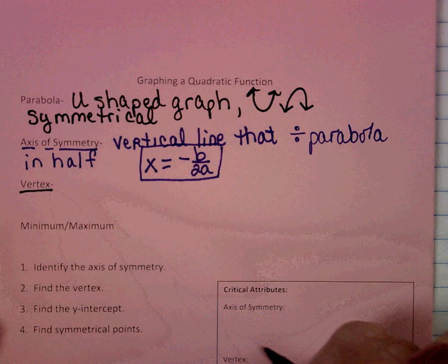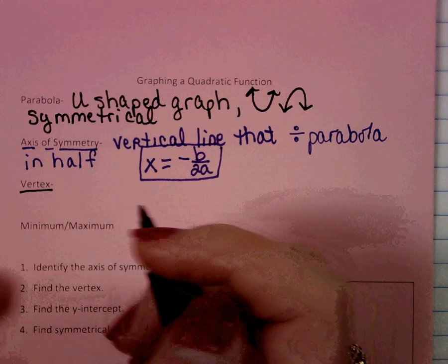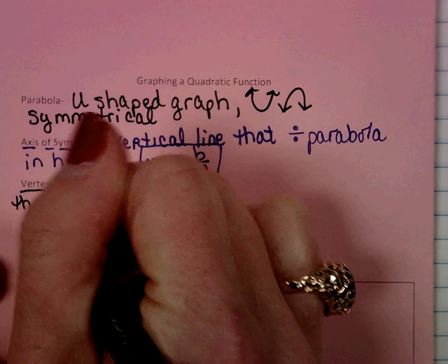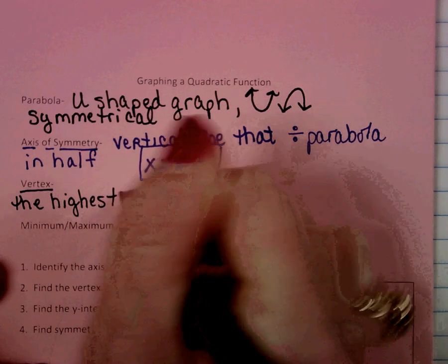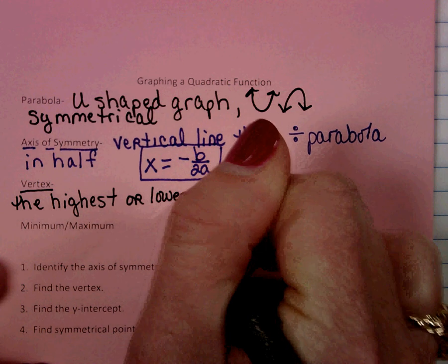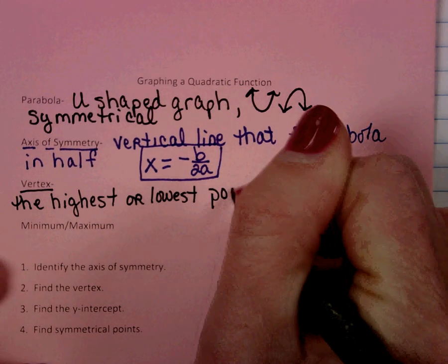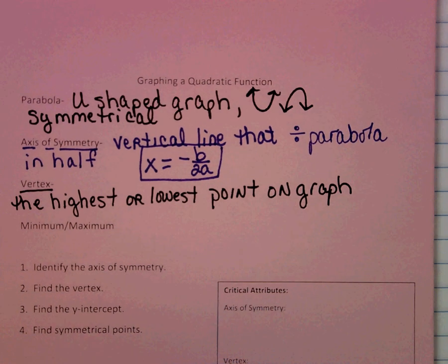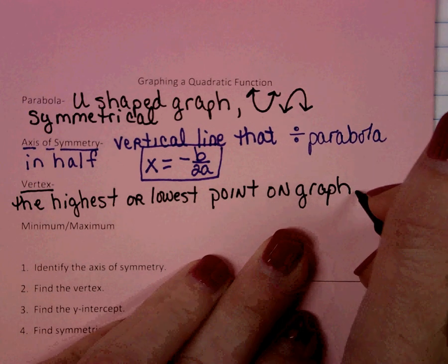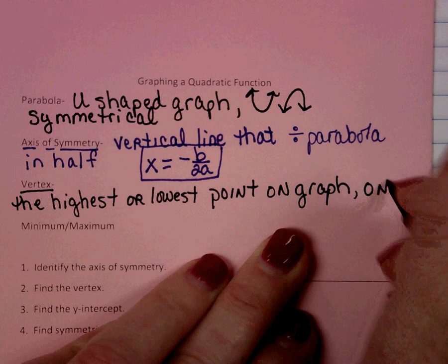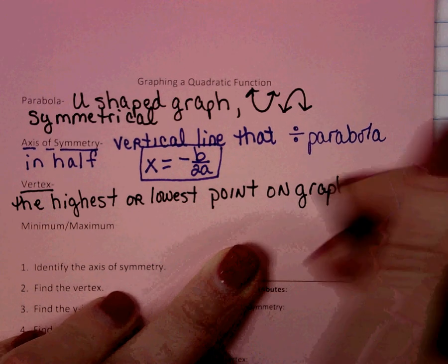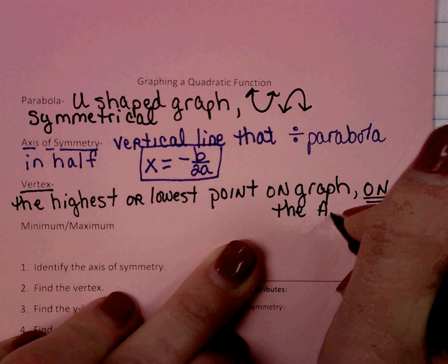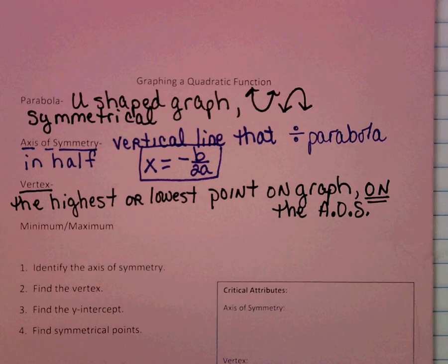Another important thing on our graph is the vertex. The vertex is the highest or lowest point on a graph — just like the peak of a mountain or the bottom of a valley. Something important to know is that the vertex is on the axis of symmetry, so those two things are related.